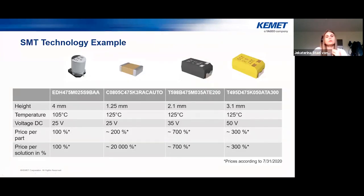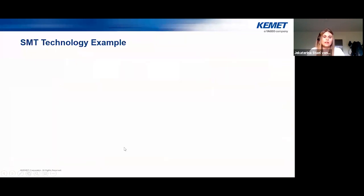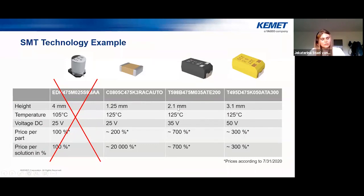Looking at price, considering how many parts are needed and checking a distribution website for approximate costs: wet electrolytic would have been the best in price. With 9 MLCCs, the cost is 20 times that of the electrolytic price. The polymer tantalum is seven times higher, and standard tantalum is three times higher. However, polymer tantalum has only half the footprint of the manganese dioxide tantalum and a slightly lower height, so it may be worth considering to make the overall application smaller.